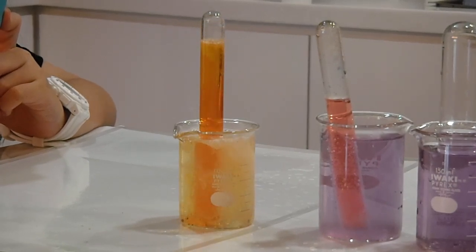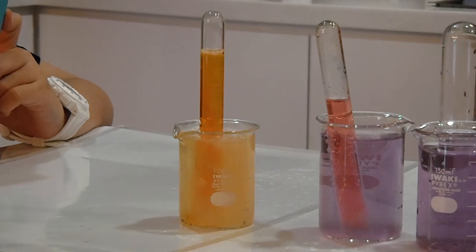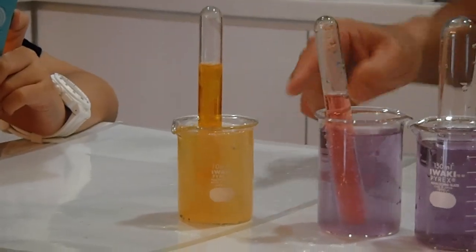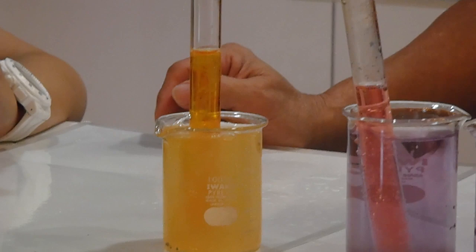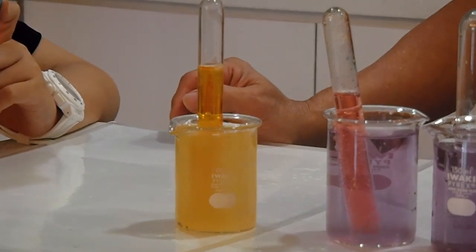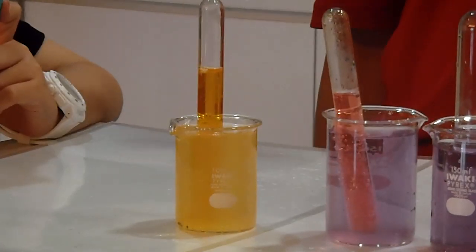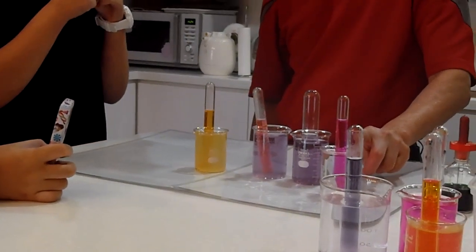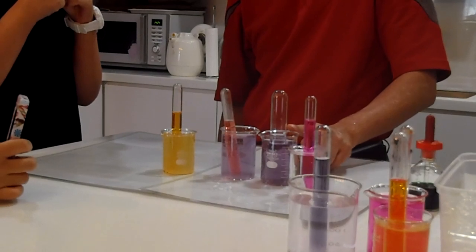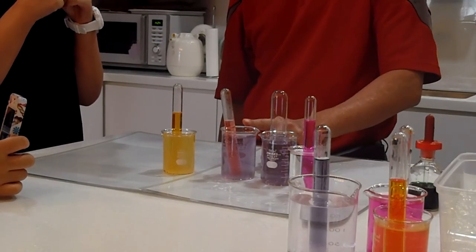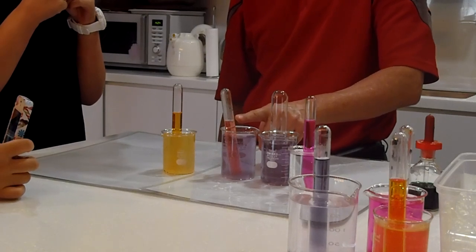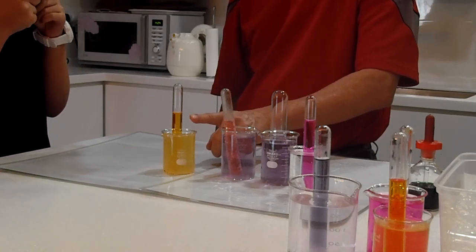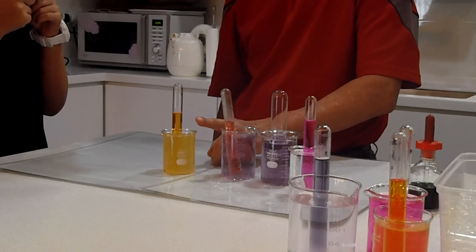Oh, you see the test tube changes color? From orange to yellow, right? Can you zoom in? Can you zoom in with the camera? It changes from orange to yellow. Alright, let's recall. This test tube on the right changes from colorless to pink. This one changes from green to purple. This one didn't change very much. Red becomes a little bit orangey outside purple. And the one on the left changes from orange to yellow. Okay.